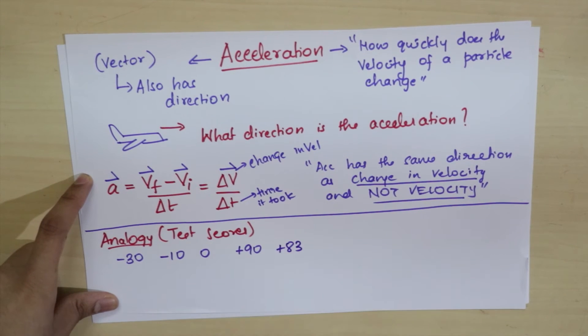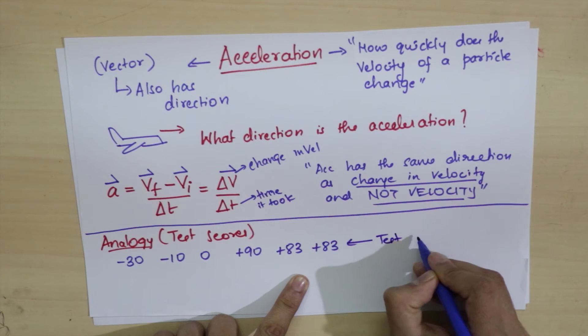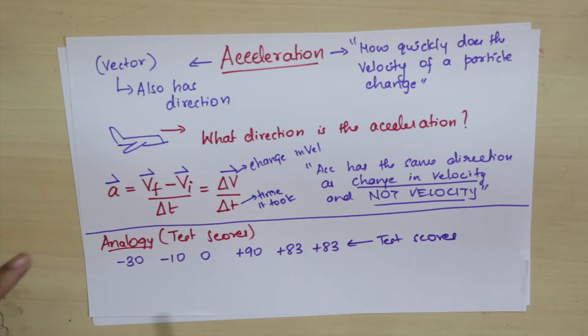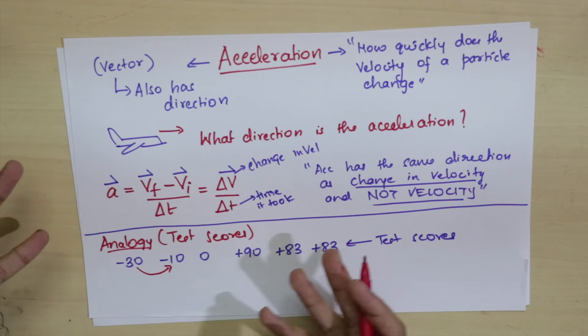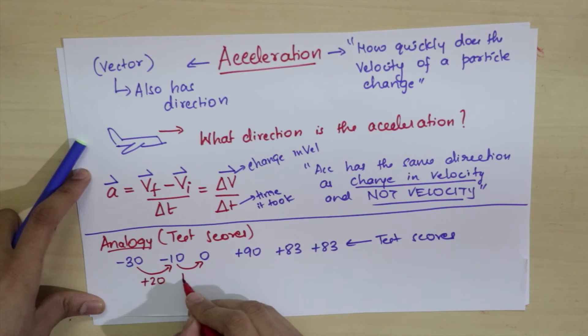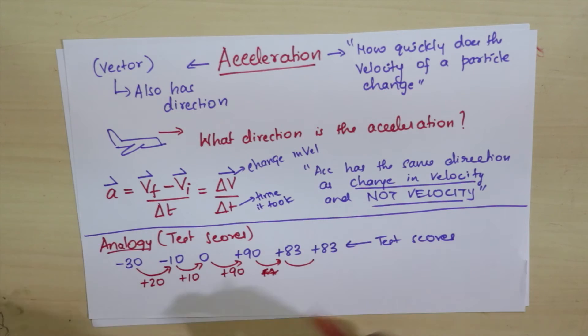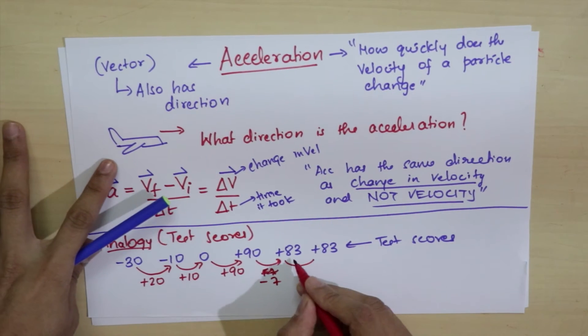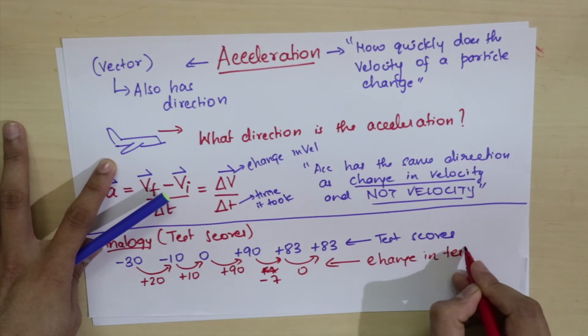Then you get plus 83, and the last test another 83. These are your test scores. Now let's think about how much you've improved. From minus 30 to minus 10, although your test score is still negative, you've improved—you got 20 points more. There's a plus 10 improvement next. You have a huge improvement here, then a minus 7 improvement, and zero improvement in the last test. This is change in test scores.